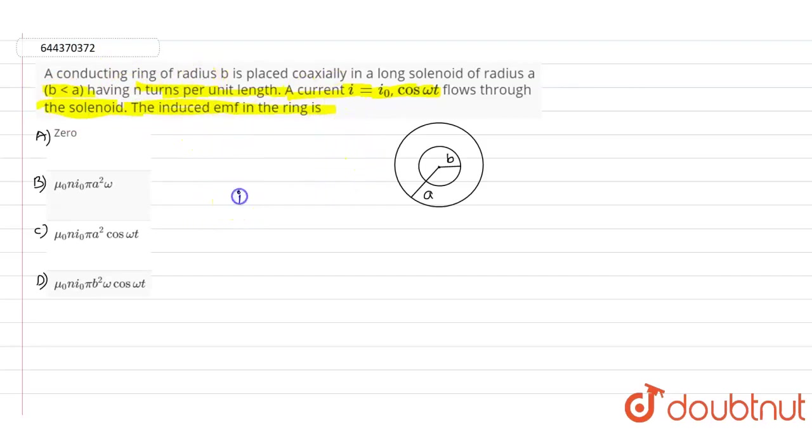Given the current equation i = i₀ cos(ωt), if you look at this figure, we have concentric circles. The inner circle has radius b and the outer circle has radius a.